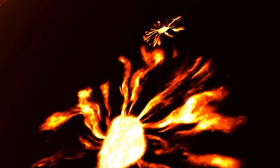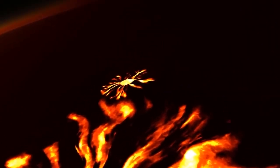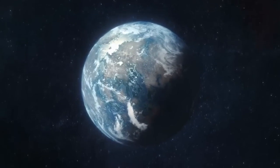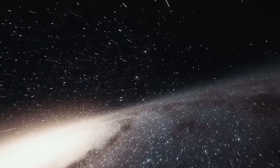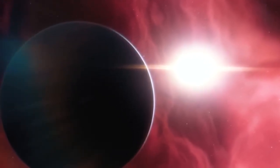HD-106906b. It's an exoplanet that orbits an F-type star as a gas giant. It has a mass of 11 Jupiters, takes 13,538.6 years to complete one orbit around its star, and orbits at a distance of 650 AU.